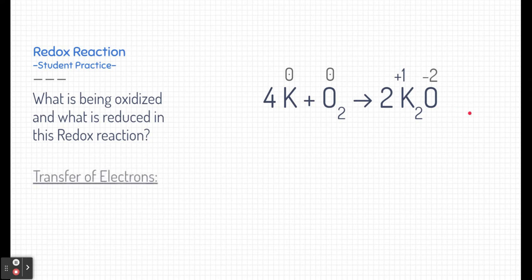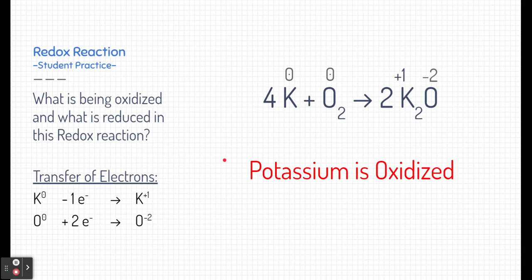All right, now if we take a look at the transfer of electrons, there are some elements transferring their electrons. Potassium starting with zero charge and becoming positive one, in order to become positively charged, it had to lose a negatively charged electron. Potassium, in this case, is oxidized. Oxygen, on the other hand, starting with zero charge, gained two electrons each, and they became minus two charge. So in this case, oxygen is reduced. This is indeed a redox reaction.